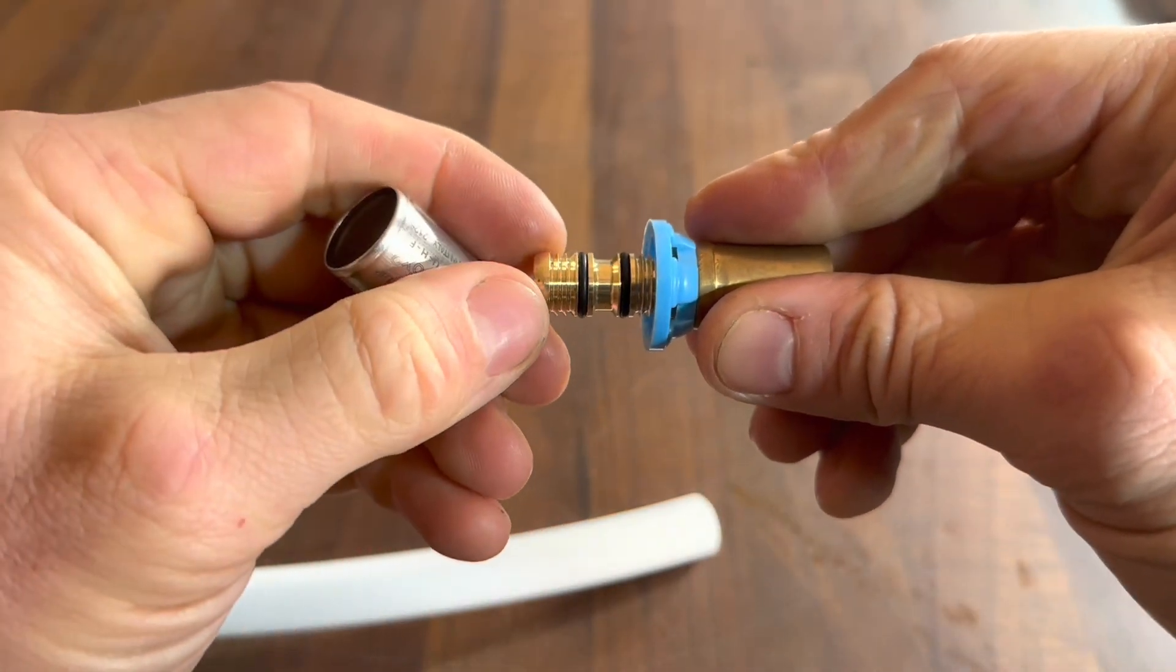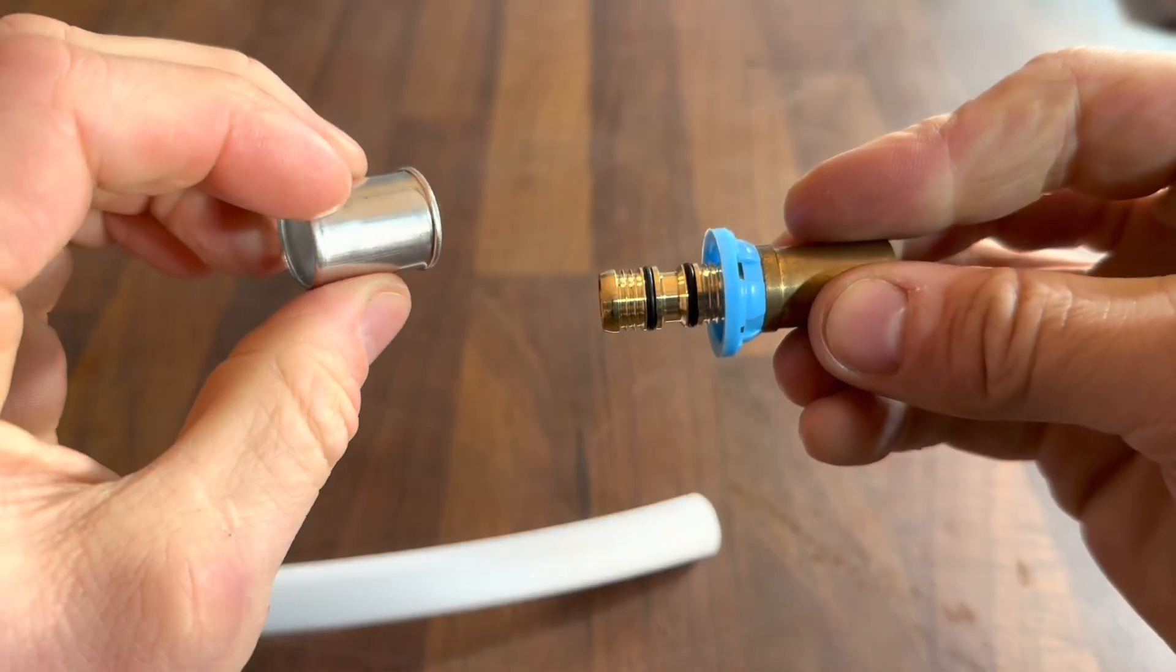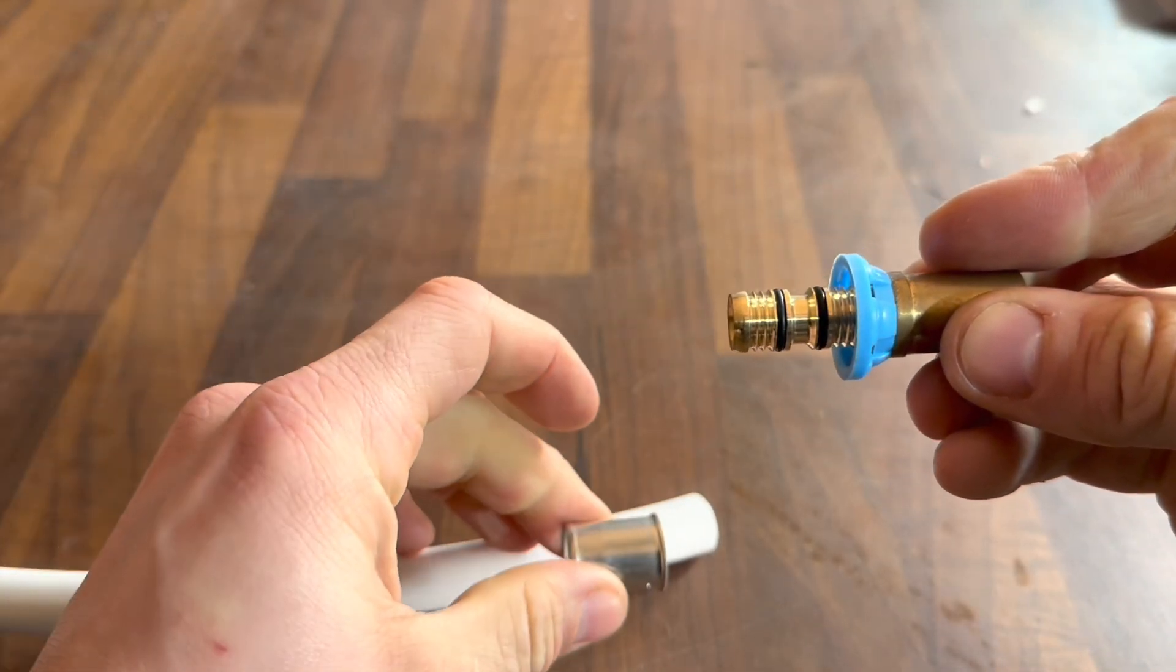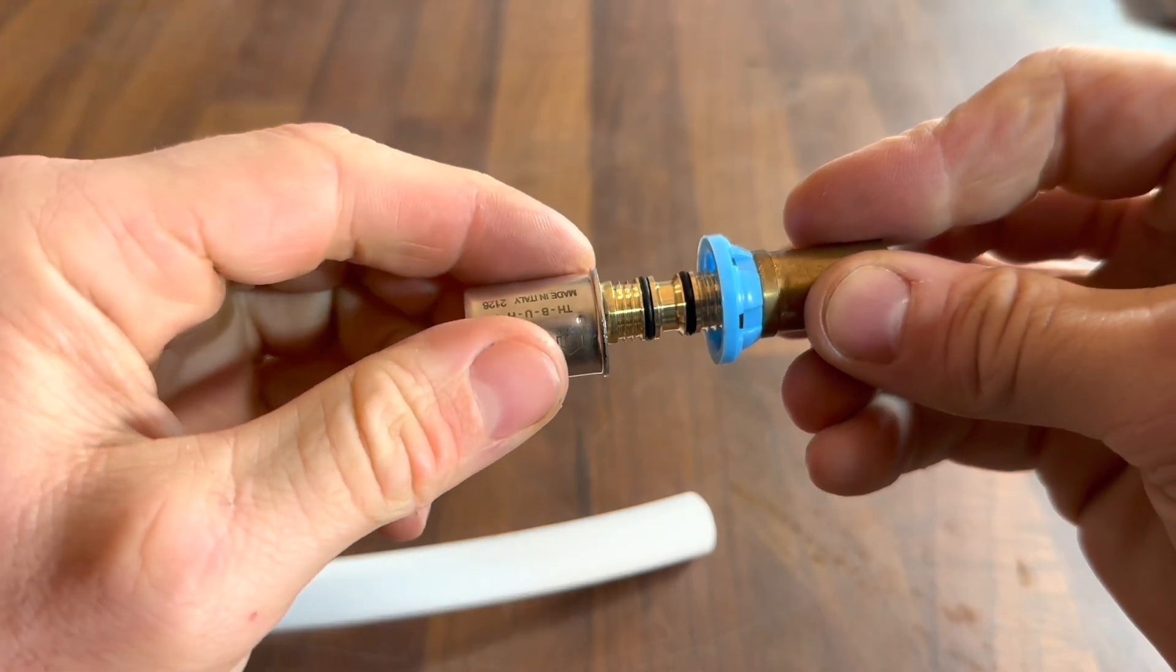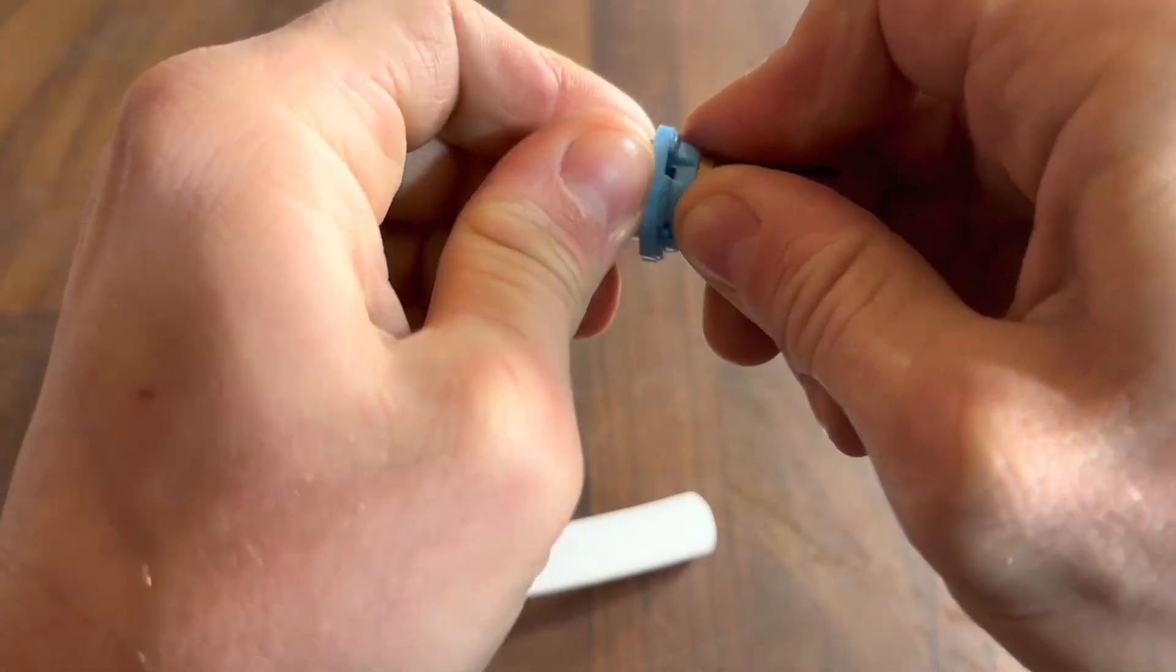So we've got two o-rings there. This outer collar here gets crimped onto the outer layer of the pipe and then the internal will be gripping around these o-rings and the way it does that, if I just pop this back together...